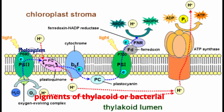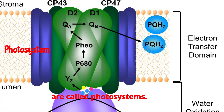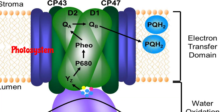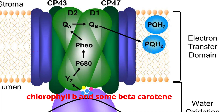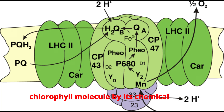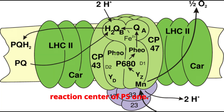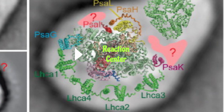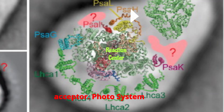The light-absorbing pigments of thylakoid or bacterial membranes, arranged in functional arrays, are called photosystems. Photosystem 1 has a small amount of chlorophyll B and some beta-carotene attached ionically. One chlorophyll molecule, by its chemical surrounding, absorbs light at 700 nanometers — called P700 — and serves as the reaction center of PS1. Four iron atoms in each protein are bound to two sulfur atoms, called iron-S, which acts as the first electron acceptor.